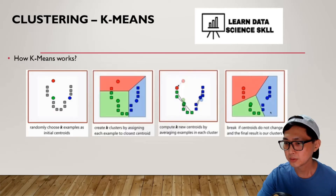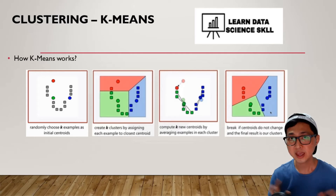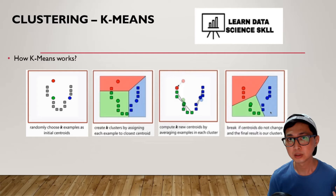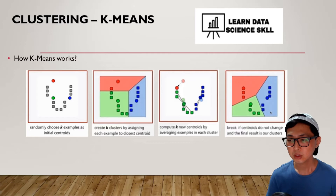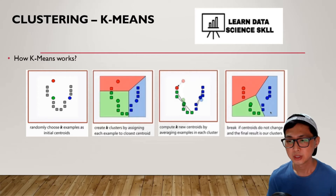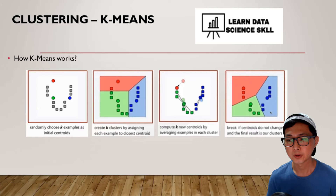Next, let me show you how k-means actually works. K is referring to the number of clusters. For k-means clustering, you have to tell the machine how many clusters it has to look for — for example, three clusters. What k-means will do first is look for three centroids, also known as centers of gravity. Randomly, from the data points, it will pick three points out of, for example, 1000 points as the initial centroids.